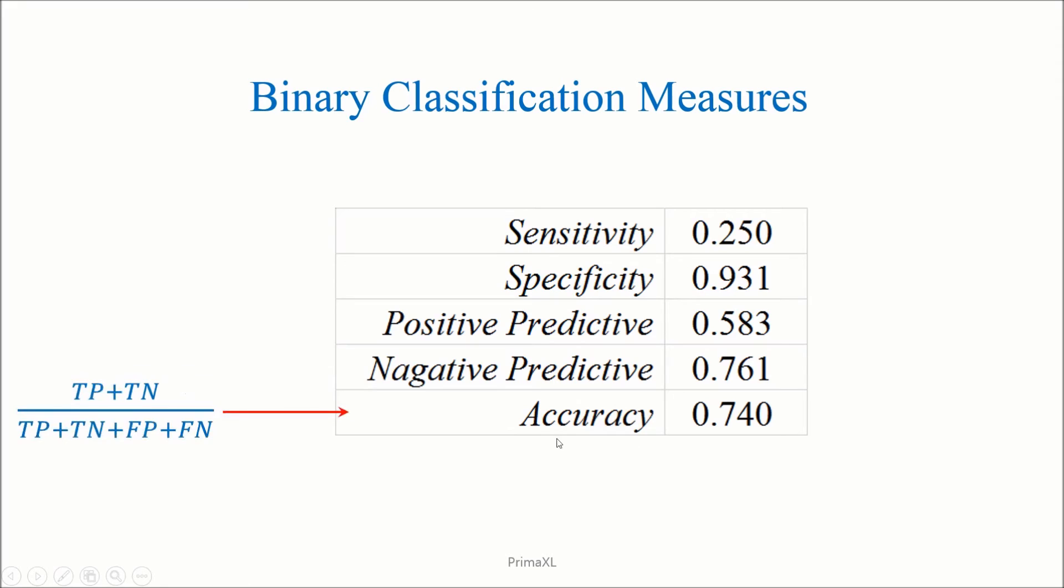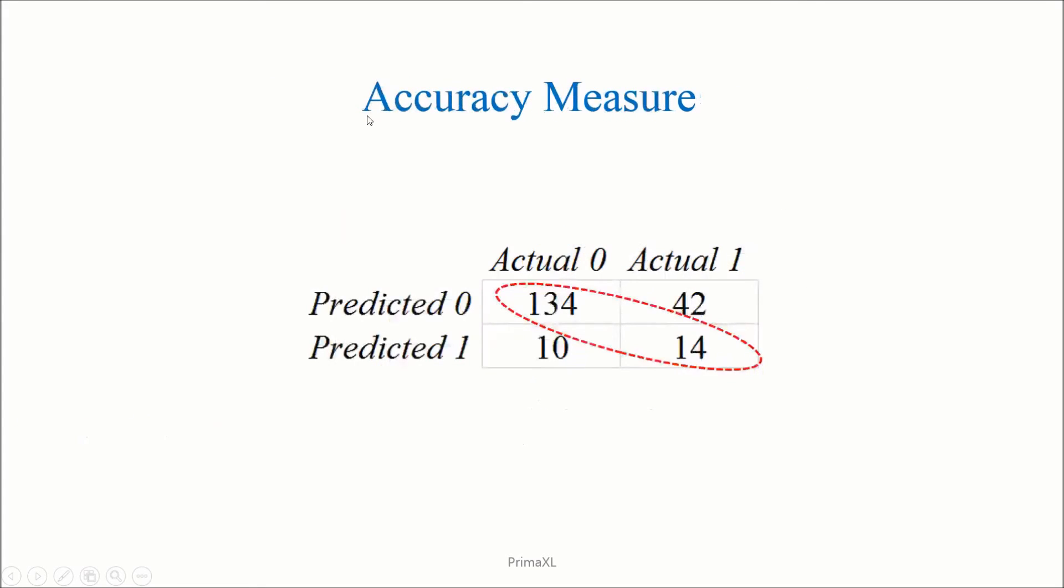And the accuracy, which is probably the most important performance measure. Here, its value is 0.74. Its formula says sum the true positive and the true negative, and divide by the sum of all the matrix elements. The accuracy is a very important measure. So let's bring back the confusion matrix and see where it comes from. The accuracy measure tells us how big the diagonal elements are compared to the rest of the matrix.